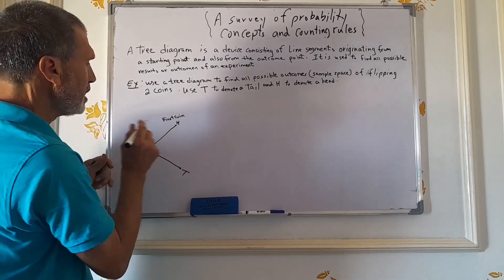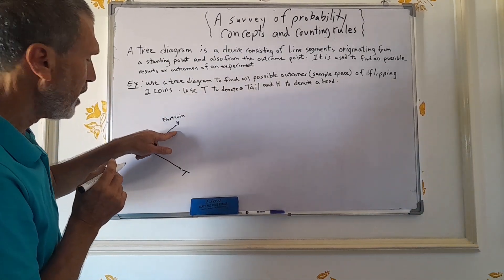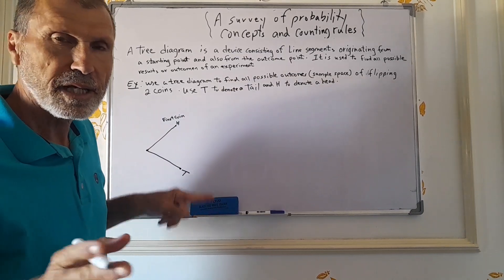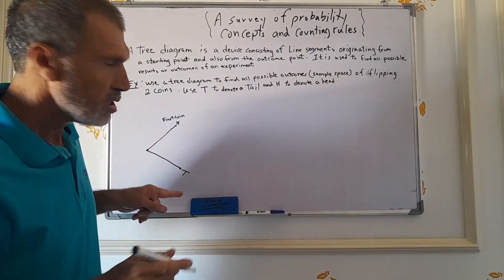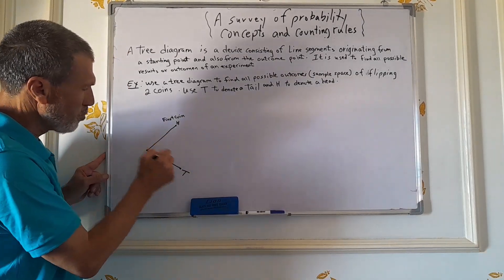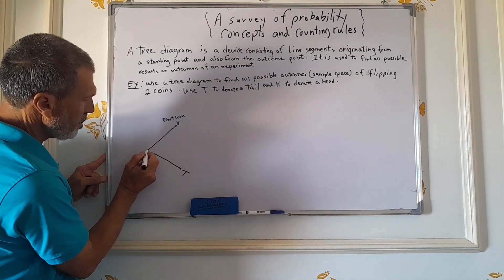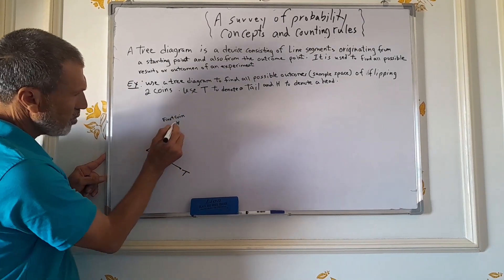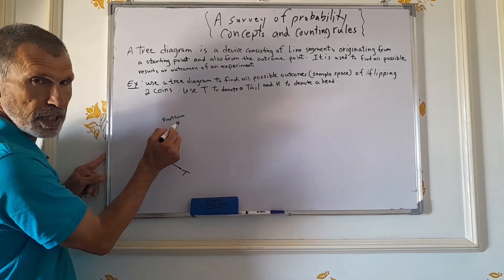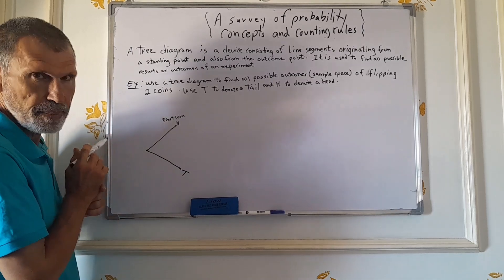Since there are two possible outcomes when tossing a coin, we draw two branches from a starting point and label them H (head) and T (tail) for the first coin. Since there are two possibilities for the second coin when the first coin is head, we draw two more branches labeled head and tail.